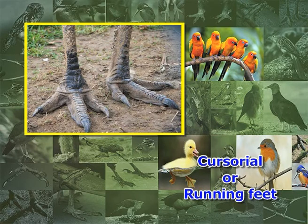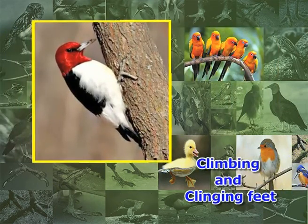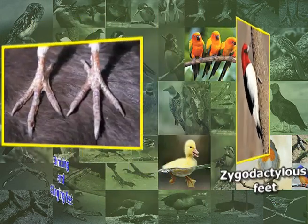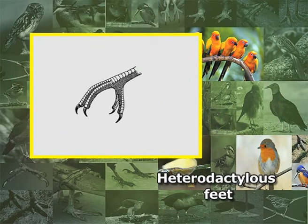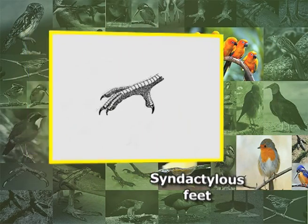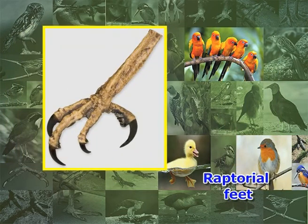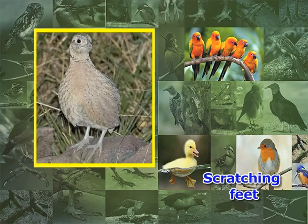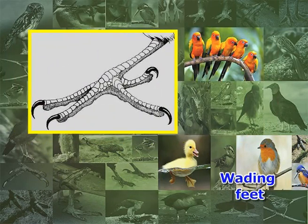There are various types of birds' feet: first, cursorial or running feet; second, perching feet; third, climbing and clinging feet, with subtypes — zygodactylus feet, heterodactylus feet, syndactylus feet, and pamperodactylus feet; fourth, raptorial feet; fifth, scratching feet; sixth, swimming feet; and seventh, wading feet.